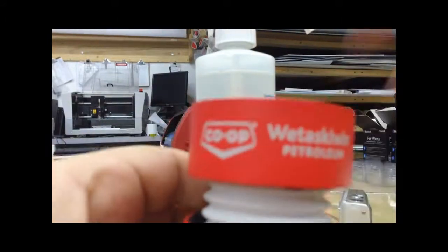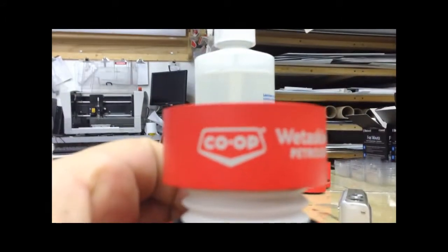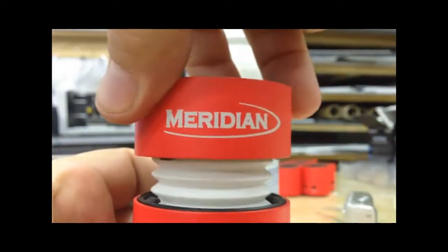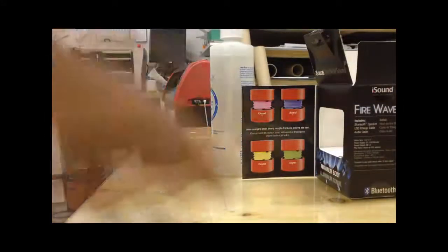You can see that the Co-op Otasco logo is super sharp. I'll just focus in here for you. And then the Meridian on the back is really sharp as well. Last thing we have to do is repackage it.